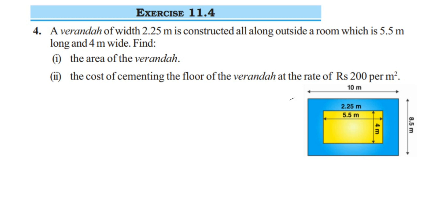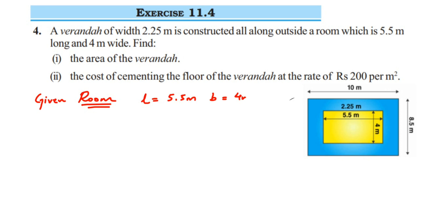Now we find the area of both things separately and then subtract. For the room, the length is 5.5 meters and the breadth is 4 meters. Since the shape is a rectangle, the area is length × breadth = 5.5 × 4 = 22 meter square.